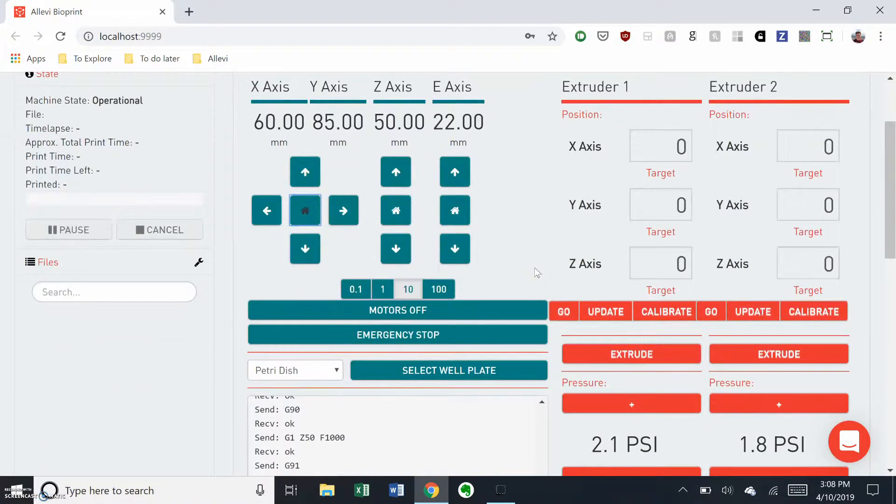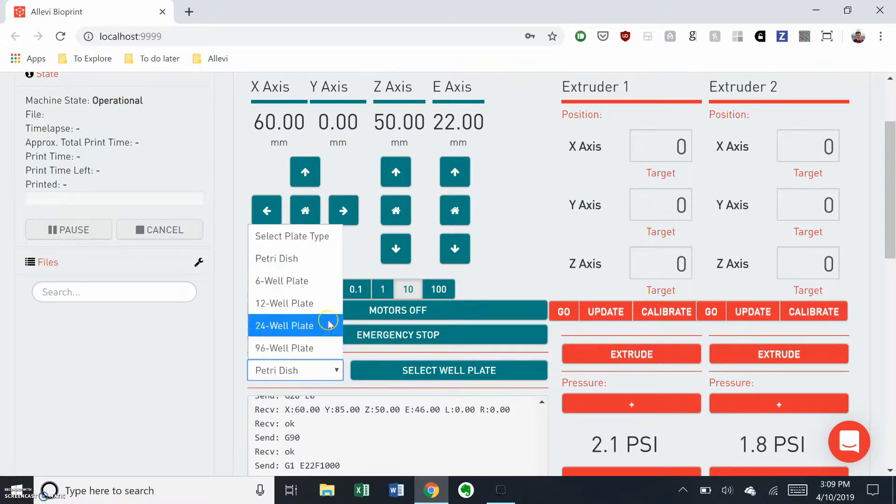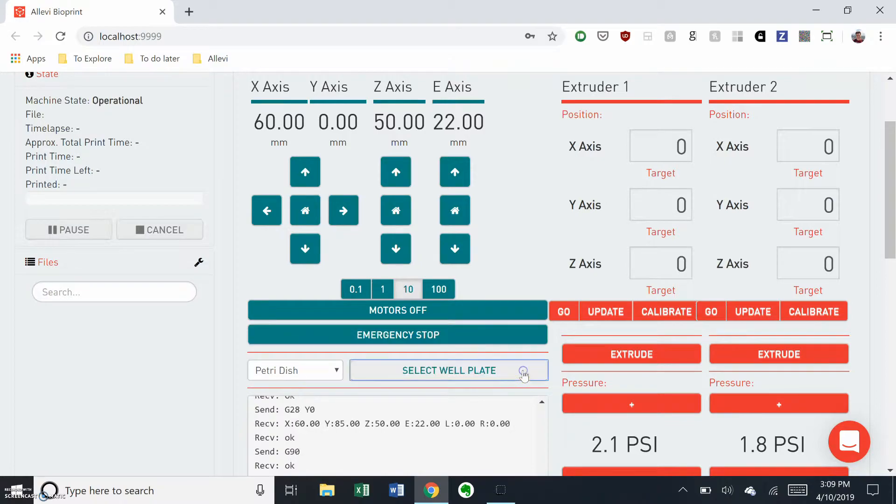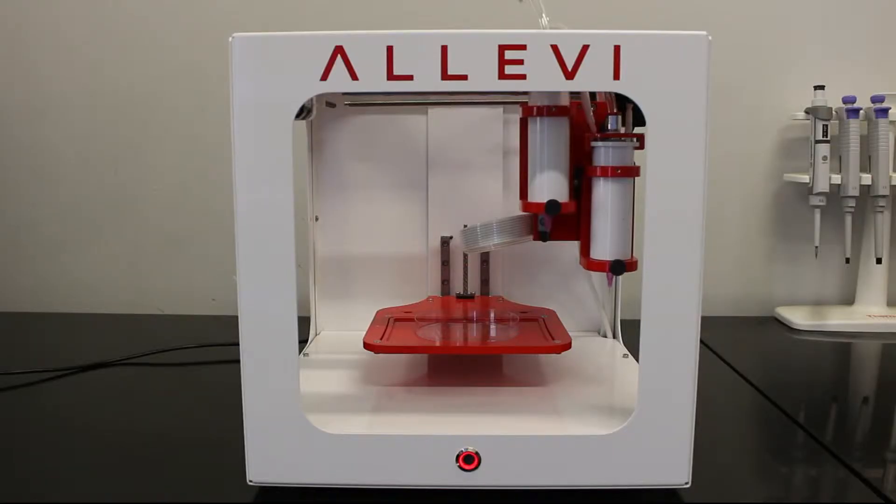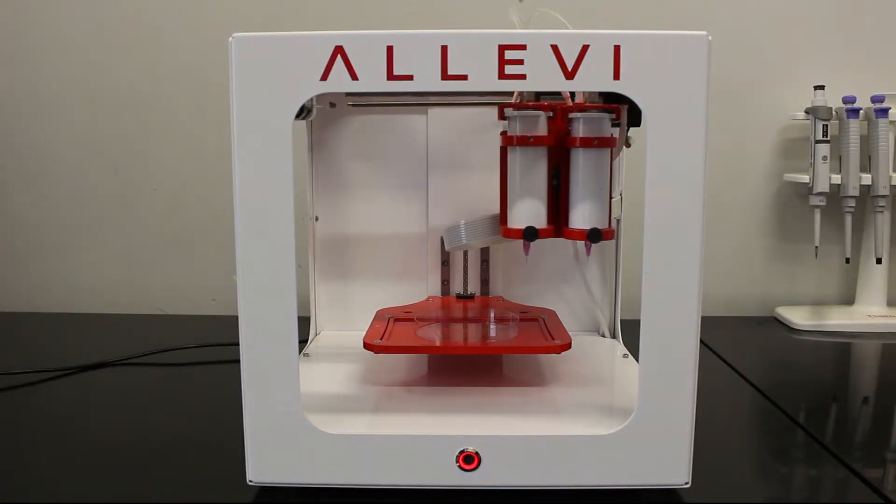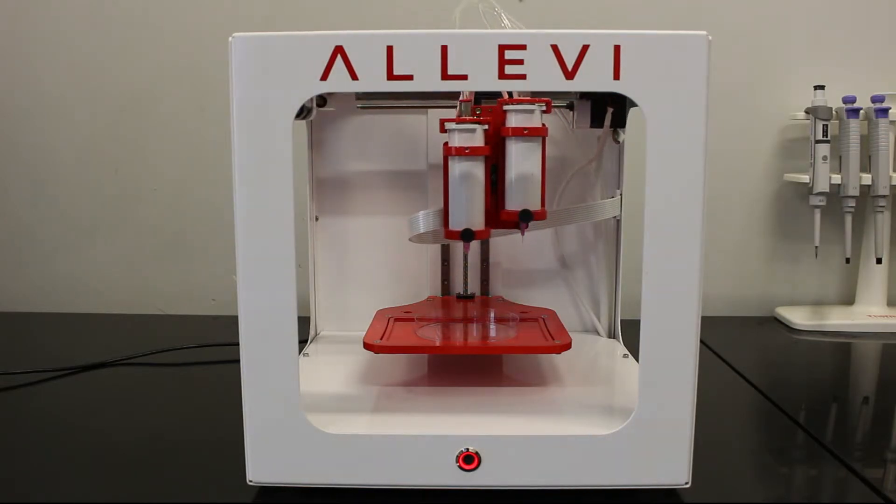Next, select your build plate. Today we'll use a petri dish, but you can choose from any of our presets. Once you've chosen your build plate, click select well plate. This will center the extruders over the build plate and activate the first extruder.